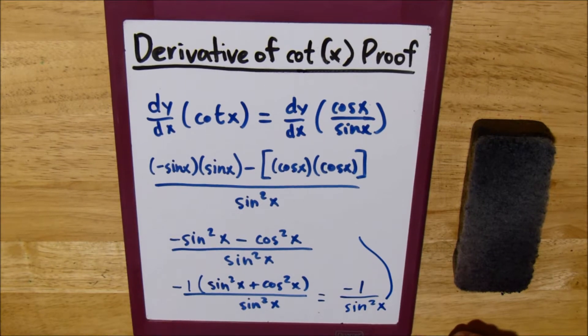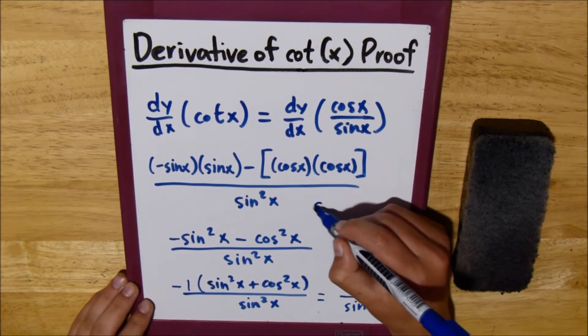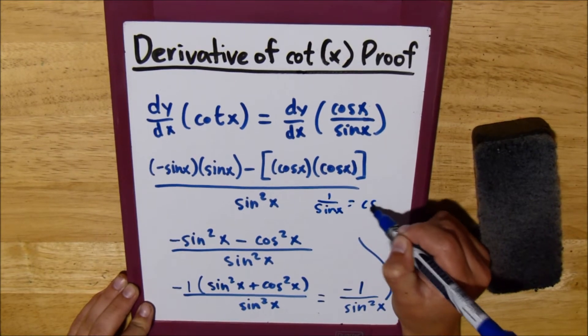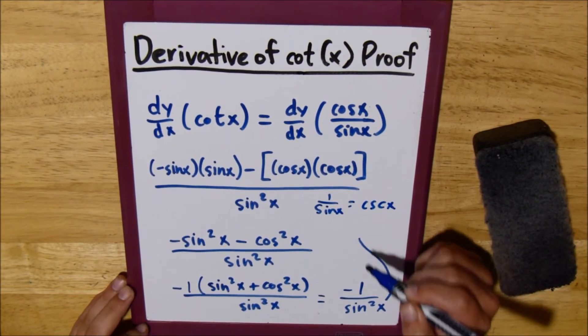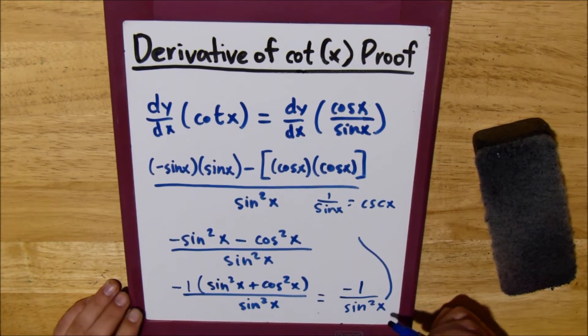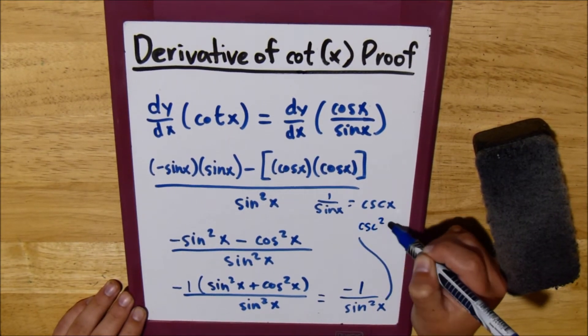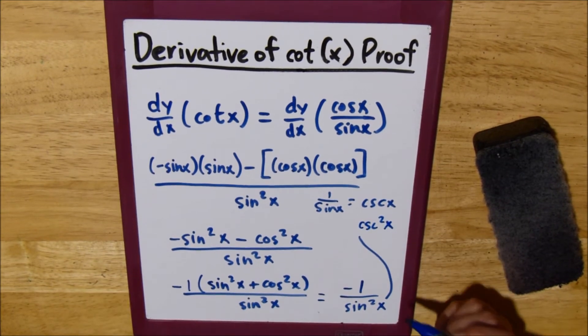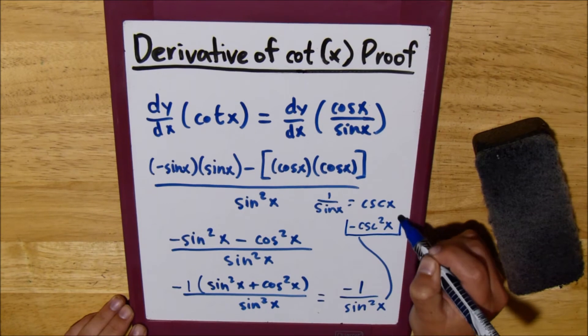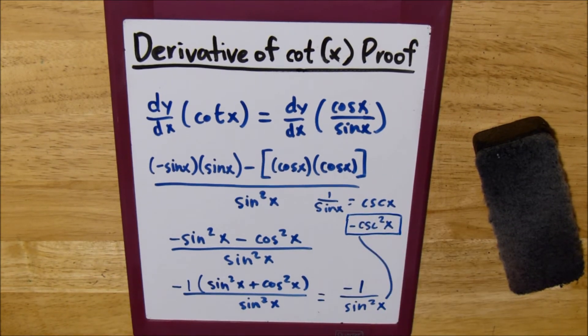We know that 1 over sine of x is the same thing as cosecant of x. So 1 over sine squared x should be cosecant squared x. And since we have this negative, we put the negative here. That is the derivative of cotangent of x.